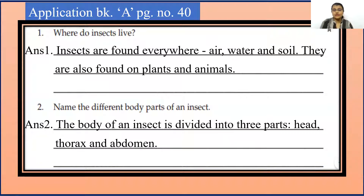Second, name the different body parts of an insect. So we all know that the body of an insect is divided into three parts: head, thorax and abdomen.